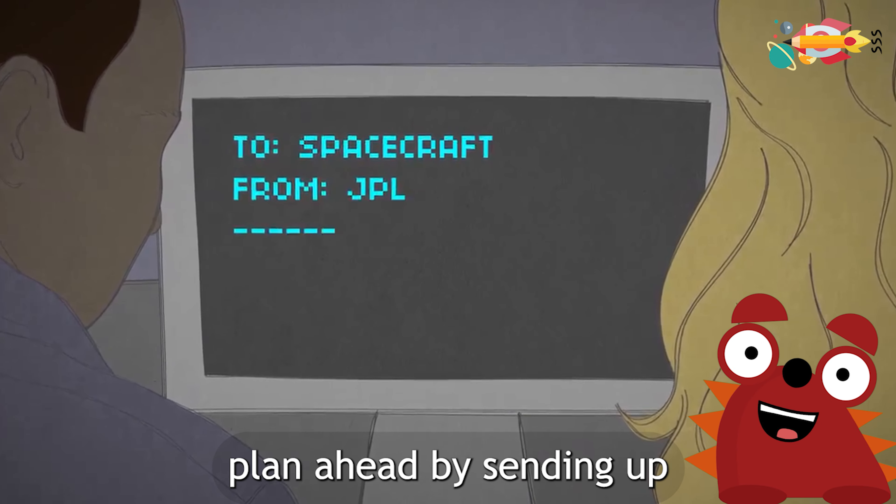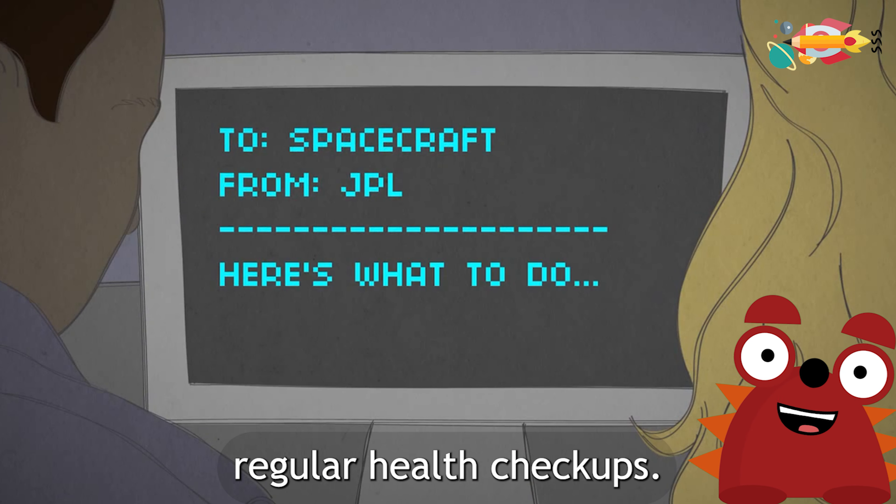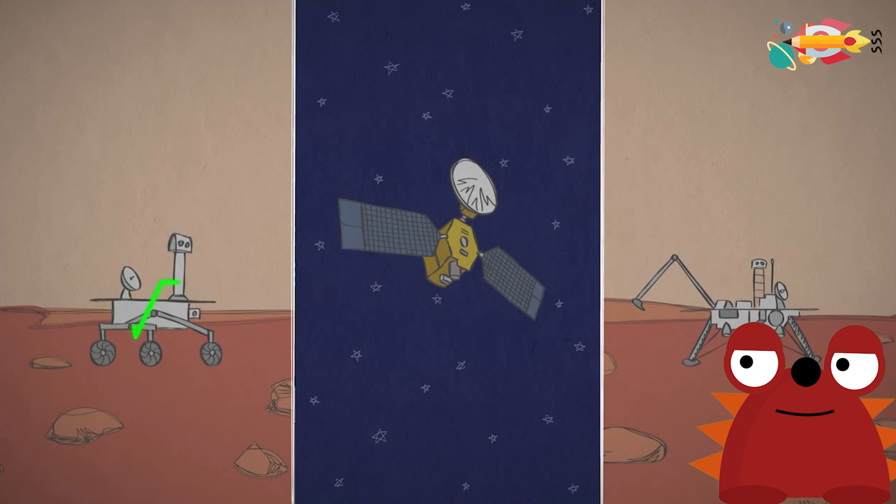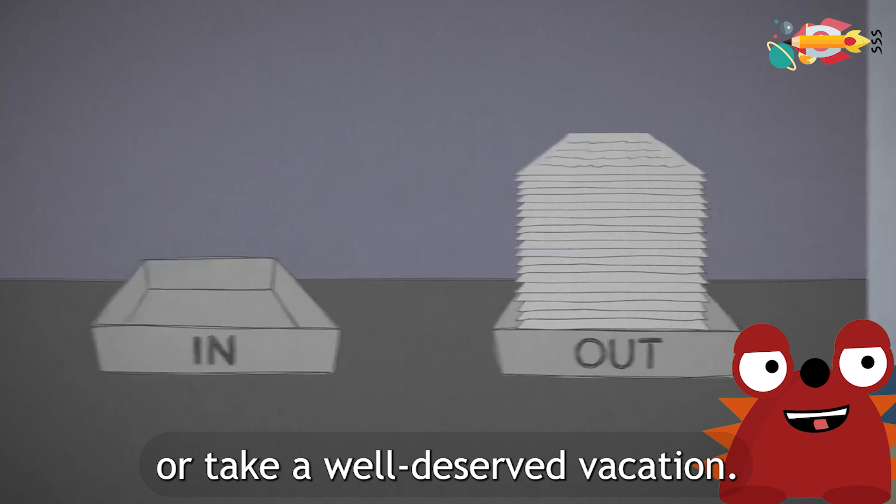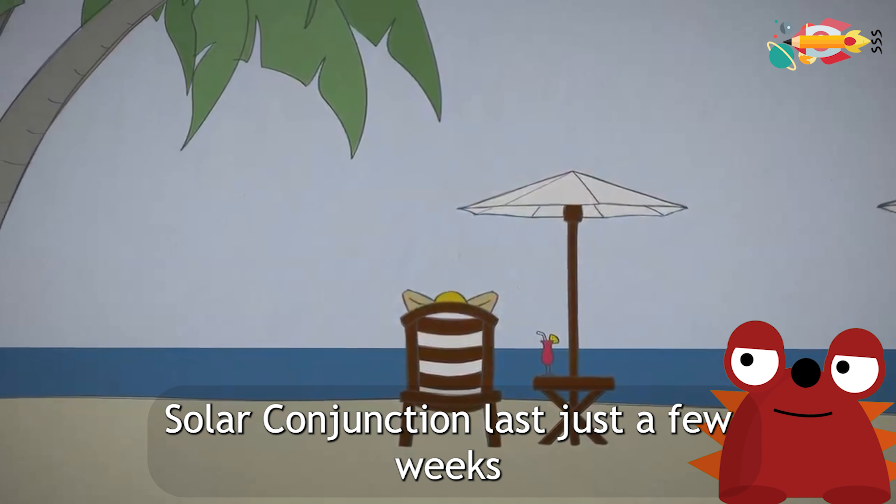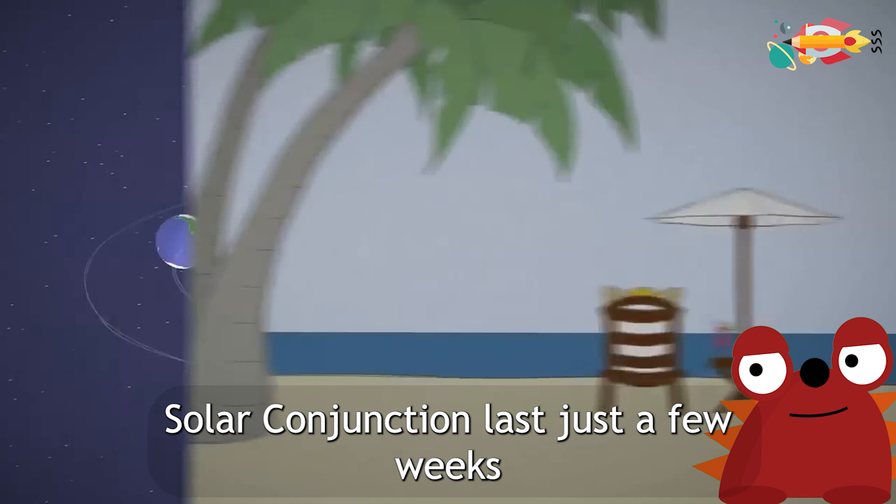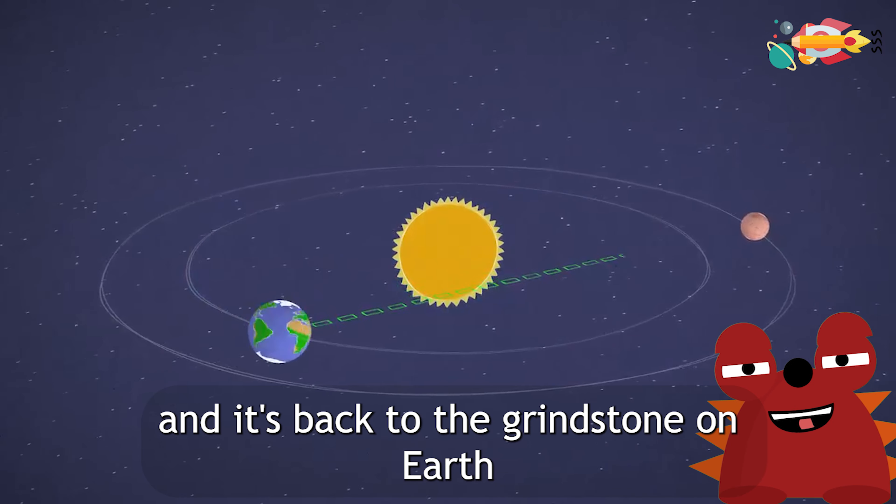So mission controllers plan ahead by sending up simple to-do lists, including regular health checkups. Back home, this break in communications lets team members catch up on other work or take a well-deserved vacation. Solar conjunction lasts just a few weeks, then it's back to the grindstone on Earth and on Mars.